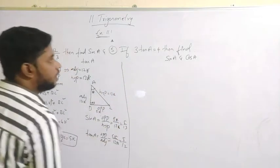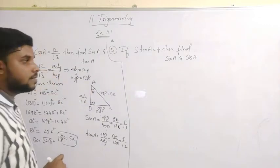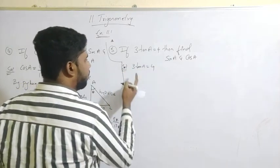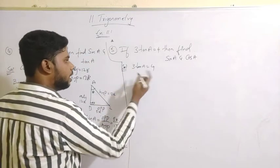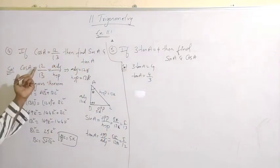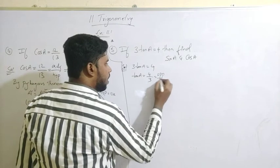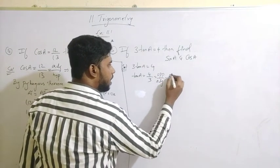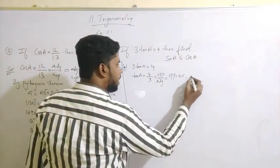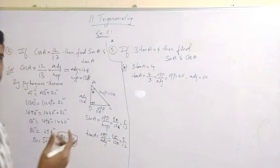Now let's see the fifth problem. If 3 tan A equals 4, find sin A and cos A. Given 3 tan A equals 4, bringing 3 to the other side gives tan A equals 4 by 3. The formula for tan A is opposite by adjacent, so I can take opposite as 4K and adjacent as 3K, where K is a positive number.